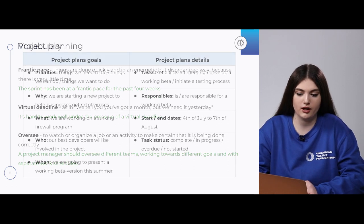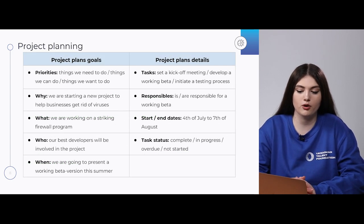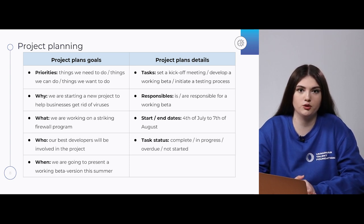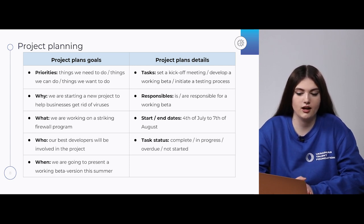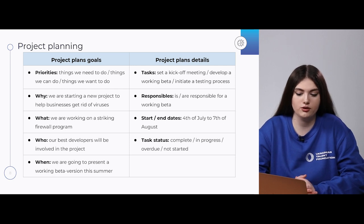As I promised at the very beginning, today we're also going to discuss project planning. When you are trying to develop a plan for your project, first you should make a skeleton and then add essential information. The skeleton will look like this: first, write down priorities — different things you need to do, things that can be done, or what you want to do. Then answer four questions: Why? What? Who? And when?